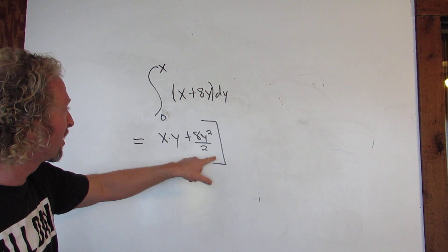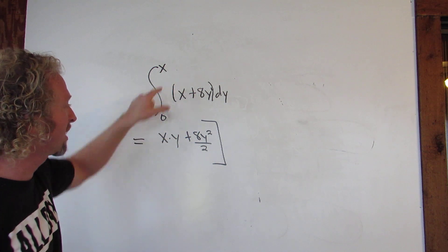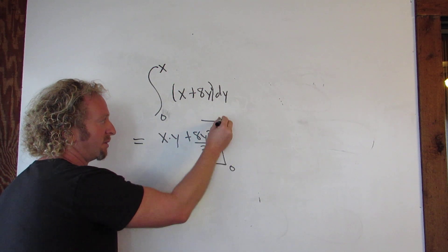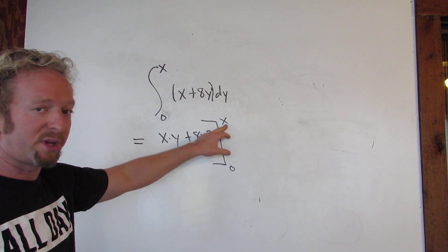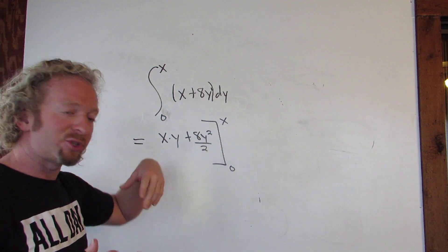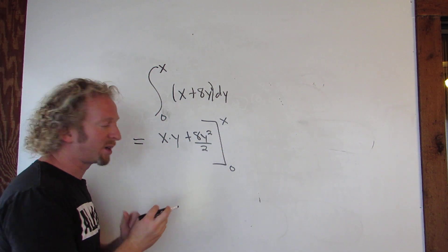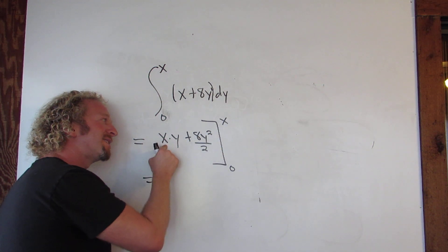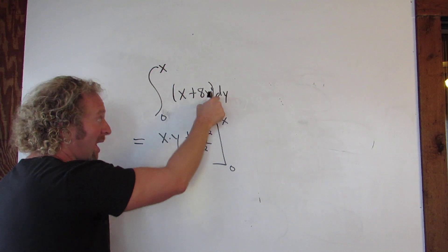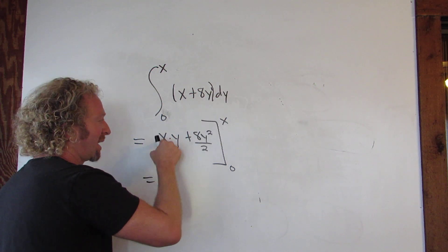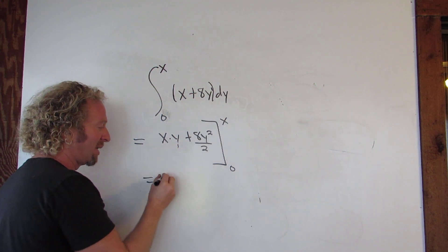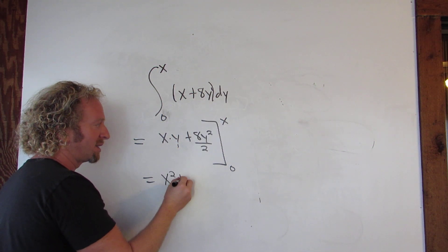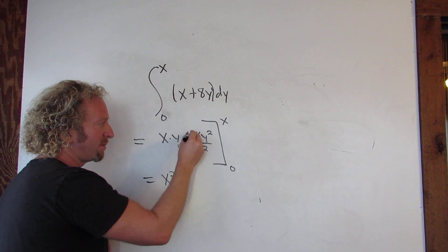So in this case, we're integrating from 0 to x, so you write a bracket and you go from 0 to x. The first one you plug in is x, you subtract, then you plug in 0. So plugging in x for y, we get x times x, so x squared, plus this is simply 4.